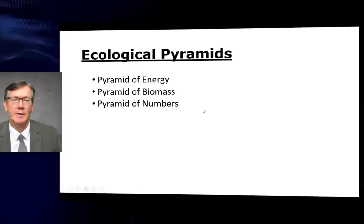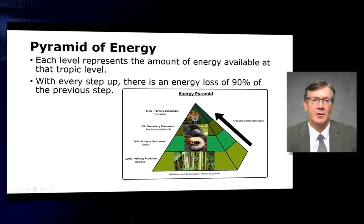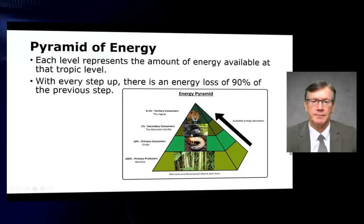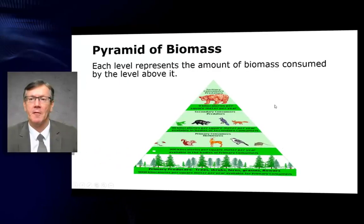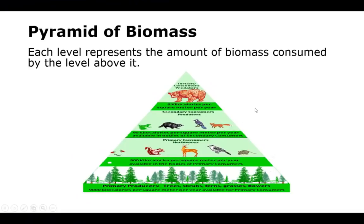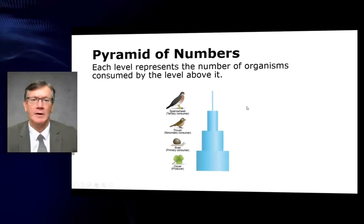Ecological pyramids: pyramid of energy, of biomass, and of numbers. In the pyramid of energy, each level represents the amount of energy available at that trophic level. With every step up there is an energy loss of 90% — so the first level is 100%, the second level 10%, the next 1%, the next 0.1%. In the pyramid of biomass, each level represents the amount of biomass consumed by the level above it — primary producers have a huge amount of biomass, decreasing at each level up to the top consumer, such as a grizzly bear. In the pyramid of numbers, each level represents the number of organisms consumed by the level above it.